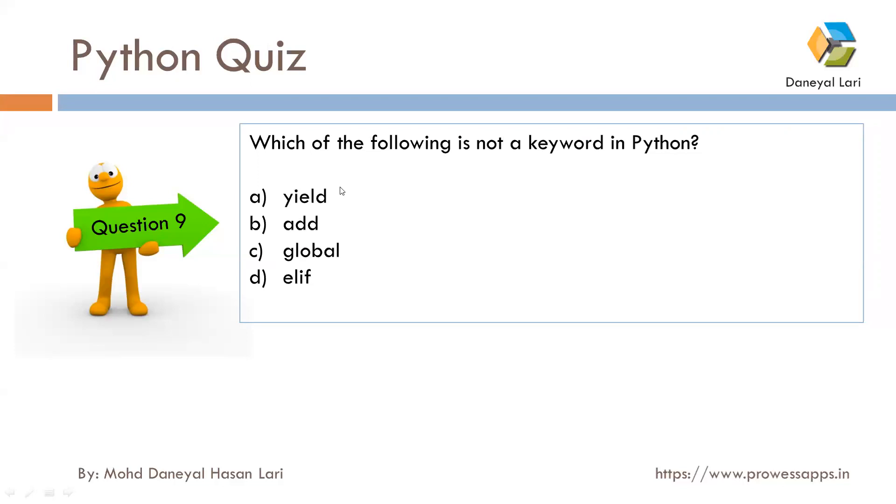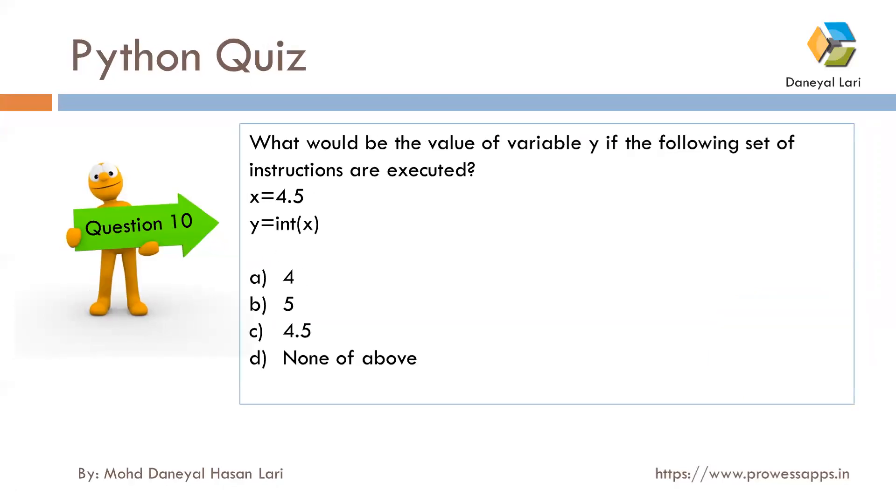Next question was: what would be the value of variable y if the following set of instructions are executed? We have learned type casting and type promotion. When you pass a float value into int function, after decimal point all the value will be discarded, so y will become only 4. The correct answer is A, 4.